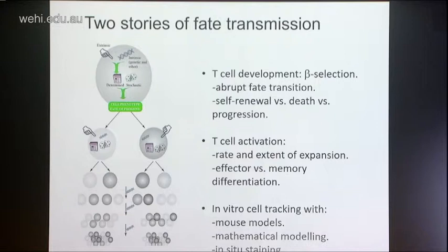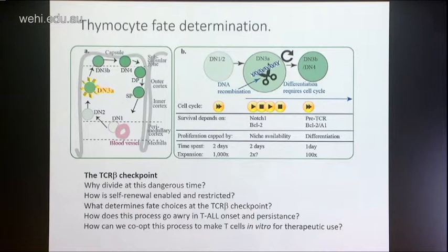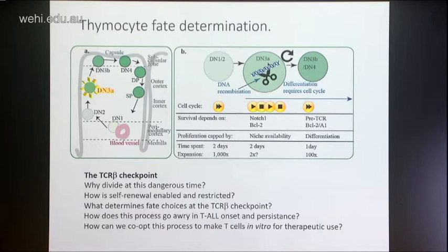Thymocyte fate determination. T-cell development — we're talking about beta selection or the T-cell receptor beta checkpoint, which is the stage where the cell first expresses a recombined T-cell receptor. It has to make sure it's got that right, and while recombining that T-cell receptor, it has to balance risks of inappropriate homologous recombination of the genome. So it has to check that it's not damaged at the end of that process. As mentioned, there's a very dramatic phenotypic shift — the cell changes its expression of all kinds of different factors as it progresses through this checkpoint from DN3A to DN4.